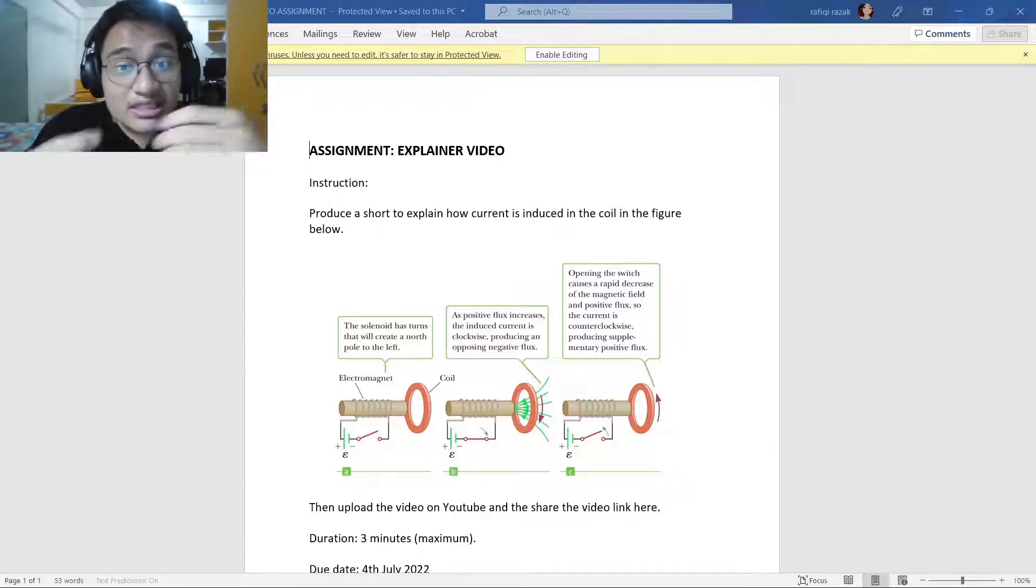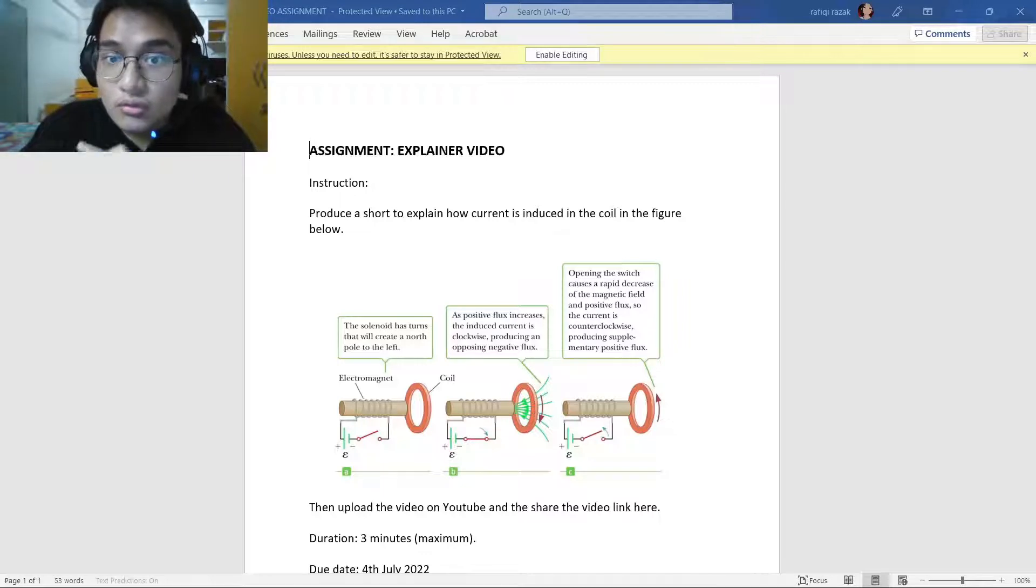consider a coil of wire placed near a solenoid in this figure. The wire is wrapped in such a way as to create a south magnetic pole at the right end when the switch is closed, like in this figure.